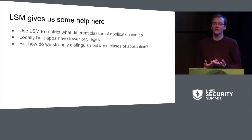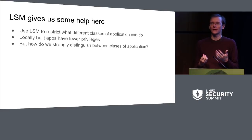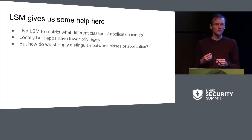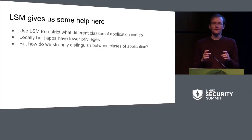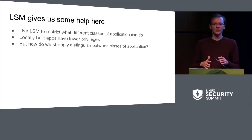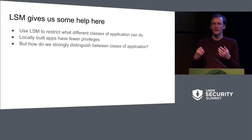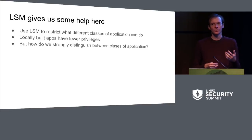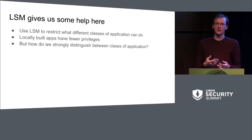Linux security modules help us a lot here. The reason we're concerned about the sanctity of code is because we trust that code not to do malicious things. If instead we're able to say nothing can do malicious things regardless of whether it wants to or not, then the situation is much easier. We don't need to ensure that only trusted code runs if even untrusted code can't do any damage. We can use LSMs like SELinux, AppArmor, SMAC, Tomoyo — the entire set of families — to restrict what applications can do.